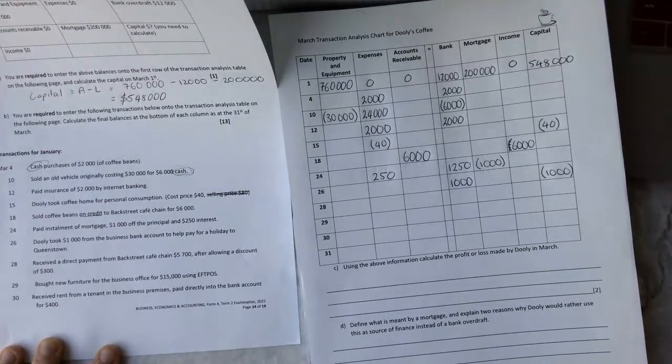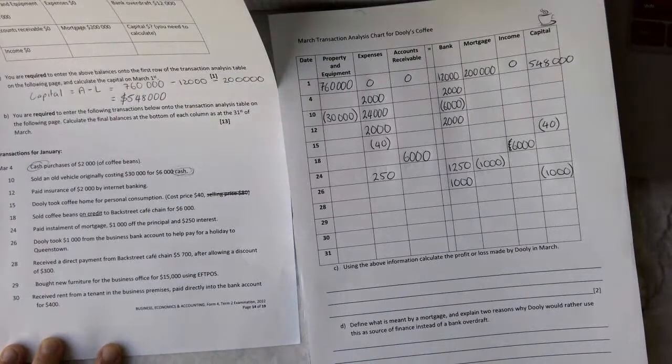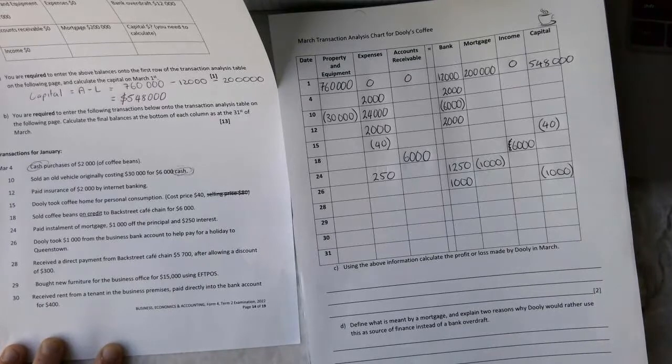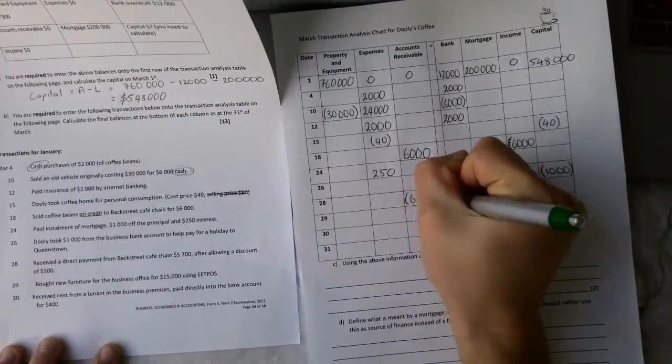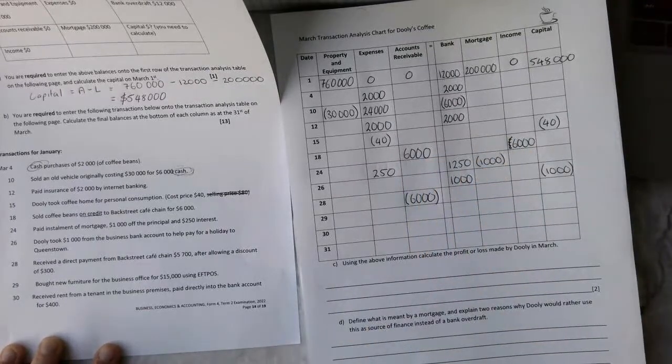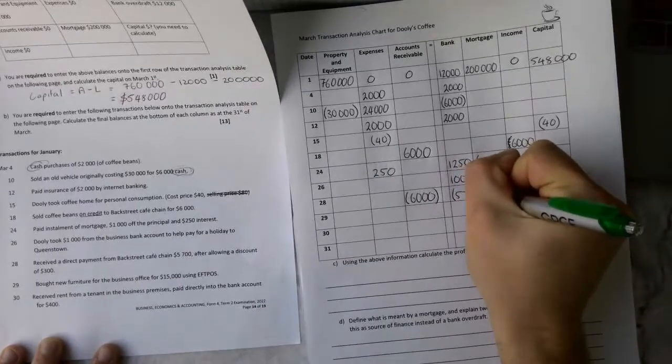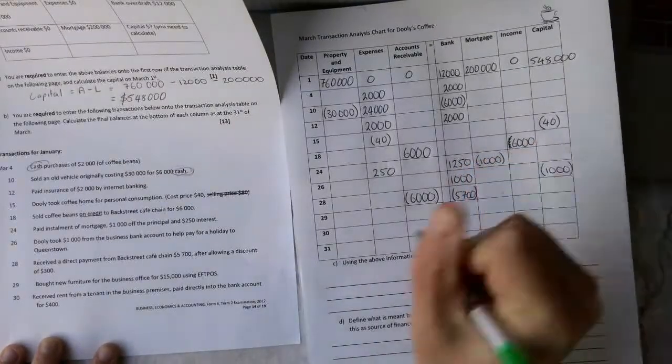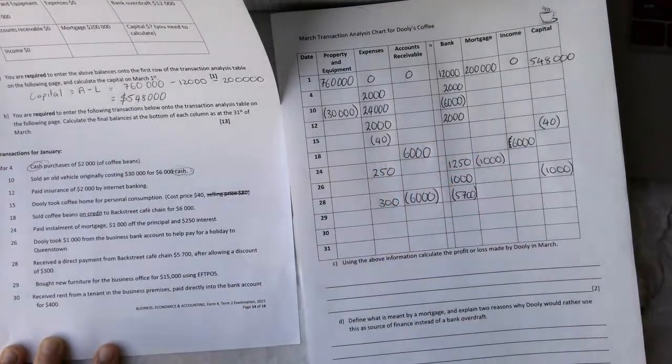On the 28th, we received a direct payment from Backstreet Cafe chain of $5,700 after allowing a discount of $300. So the total bill here would have come to $6,000. So we're going to remove that from the accounts receivable account. So we're going to bracket $6,000. But in the bank account, only $5,700 comes in. And the other $300 comes under discount allowed, which comes into the expenses account.